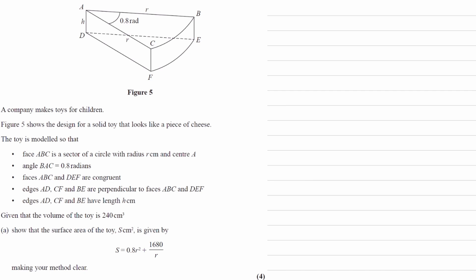Okay, now for part A. We want to show that the surface area of the toy is given by the equation below. So the information that we have here is basically a description of what's happening in the diagram. I think it's pretty clear what's happening in the diagram, so I'm not going to go over that. We're also told that the volume of the toy is 240 centimeters cubed.